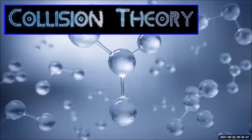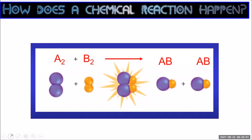Before a chemical reaction can occur, the reactants must meet. We call this a collision. Let's have a look at a reaction between two molecules, A2 and B2. What needs to happen is a molecule of A2 needs to collide with a molecule of B2. The existing bonds — the A to A bond and the B to B bond — have to break, and then new bonds need to form between A and B.